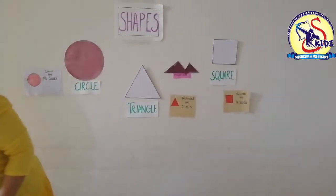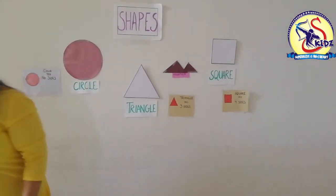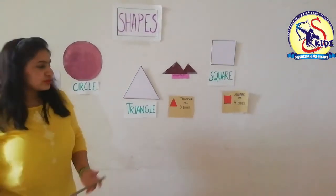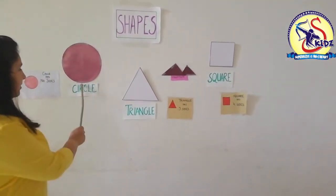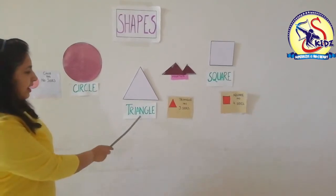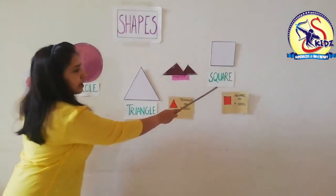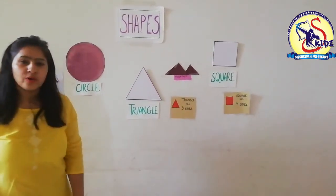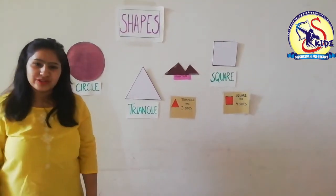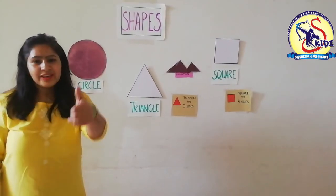Now kids, we have done three shapes today — circle, triangle, and square. I hope you all have understood. Thank you.